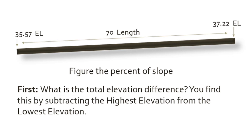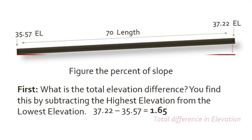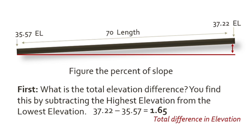In order to do this, we first need to know the total difference in the height of the elevation from the highest point to the lowest point. Now let's take the example on the screen. The highest elevation is 37.22 and the lower elevation is 35.57. If we subtract 37.22 minus 35.57, we get a total difference in elevation of 1.65.